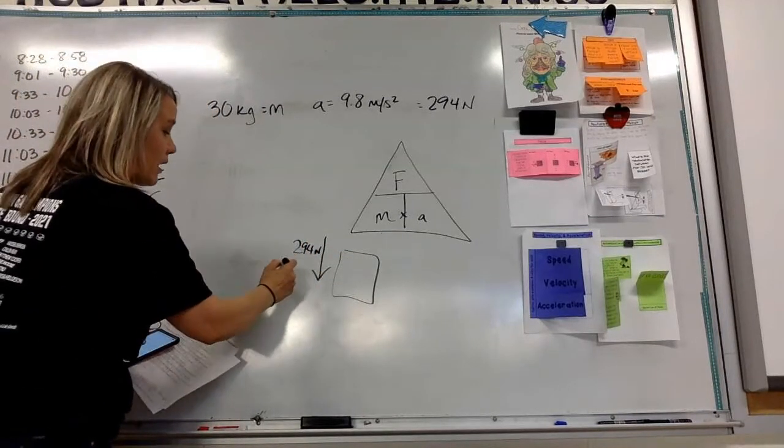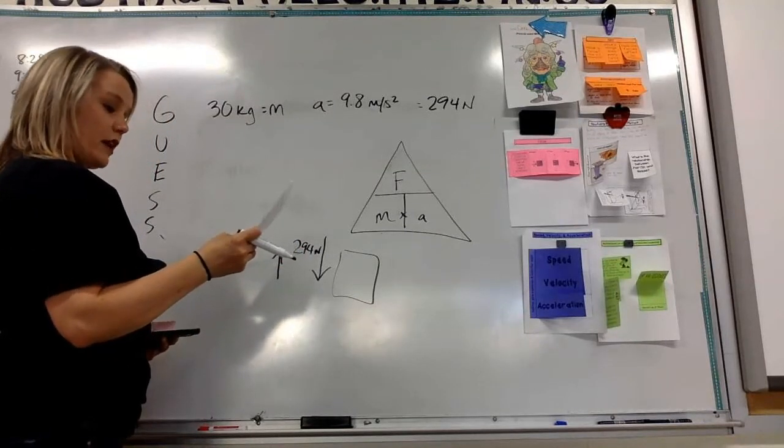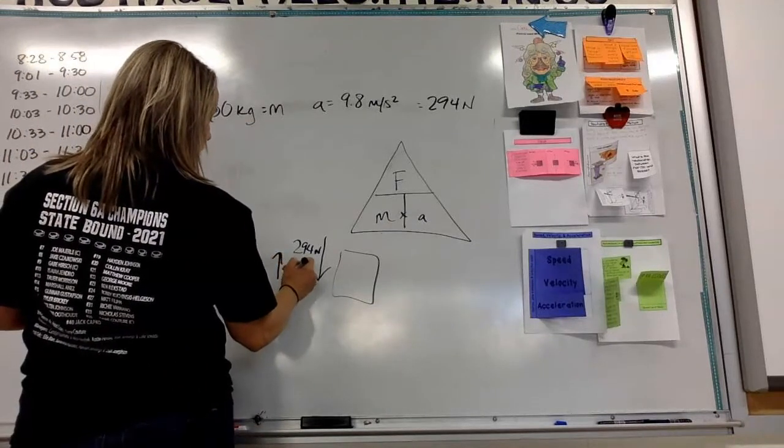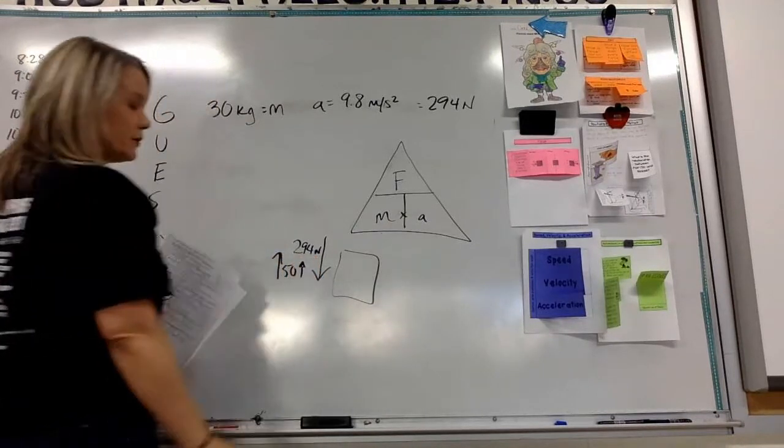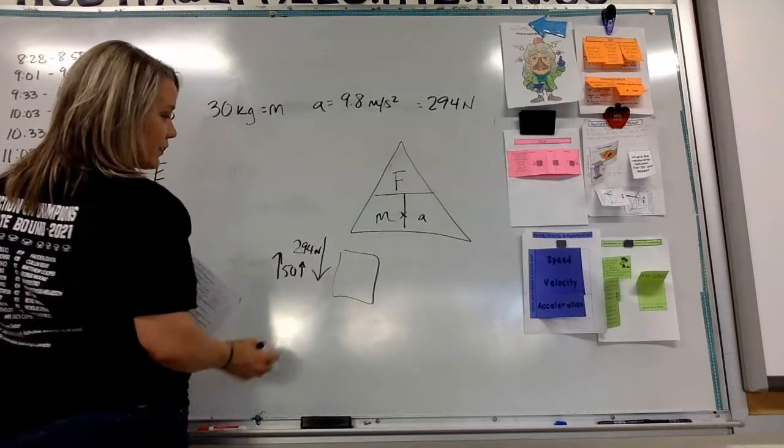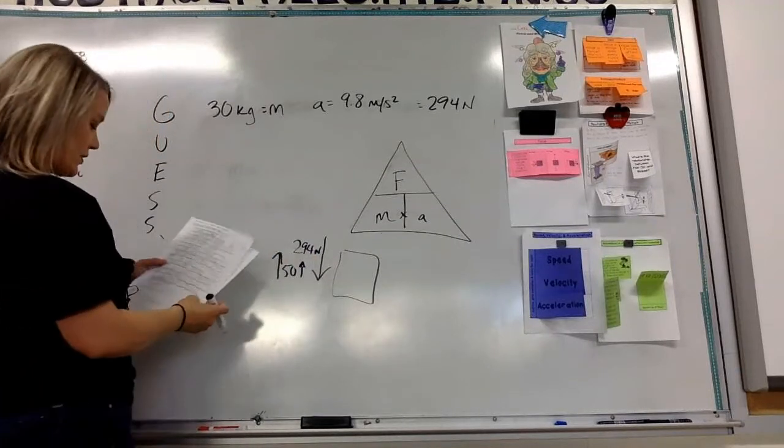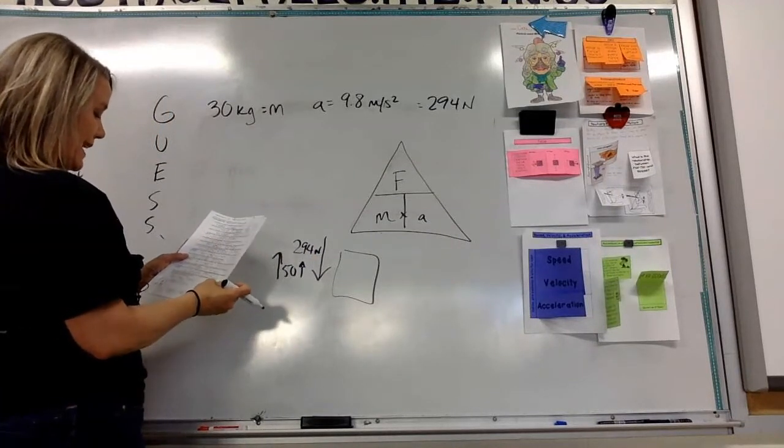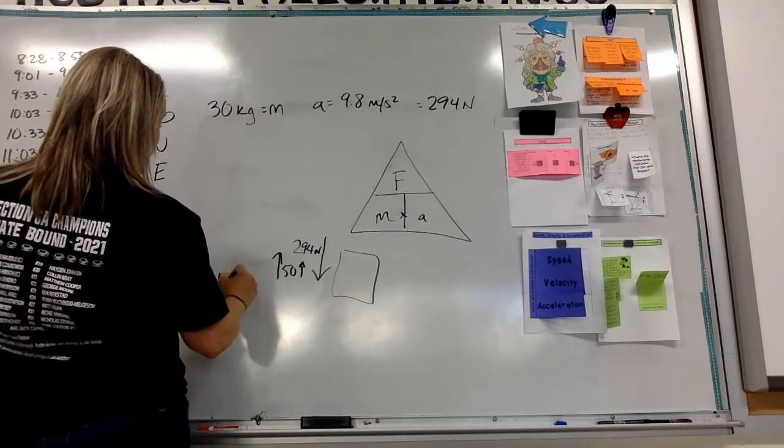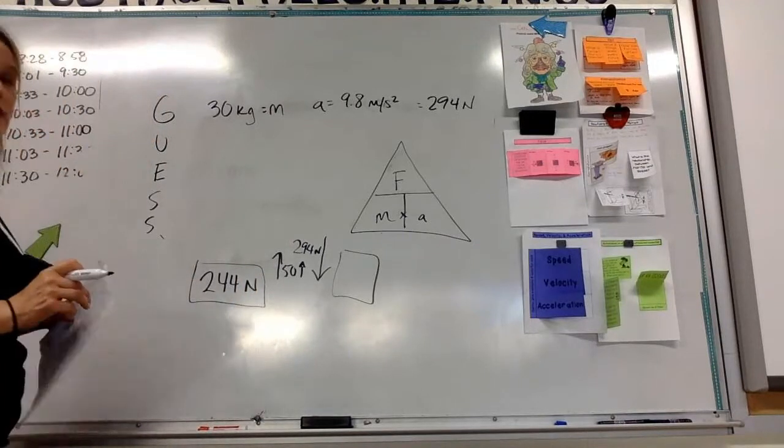So we've got an object falling down at 294 newtons, but in this problem it says that there's some air resistance pushing back upwards, right? The question says that there's air resistance of 50 newtons. So there's 50 newtons working in the opposite direction. So what we need to do is subtract 50 from 294 and we are going to get a net force of 244 newtons. That's the first part of the question.